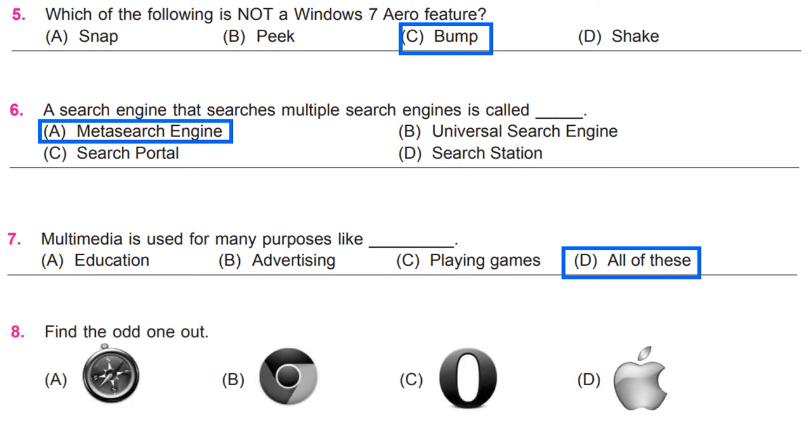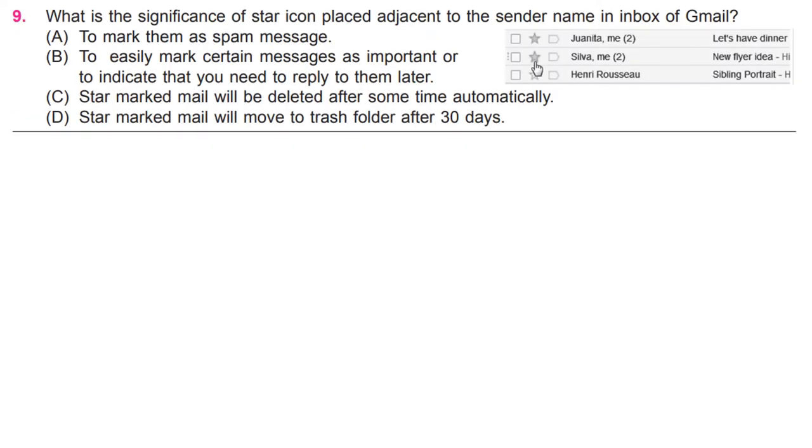Find the odd one out. D. What is the significance of star icon placed adjacent to the sender name in inbox of Gmail? B, to easily mark certain messages as important or to indicate that you need to reply to them later.